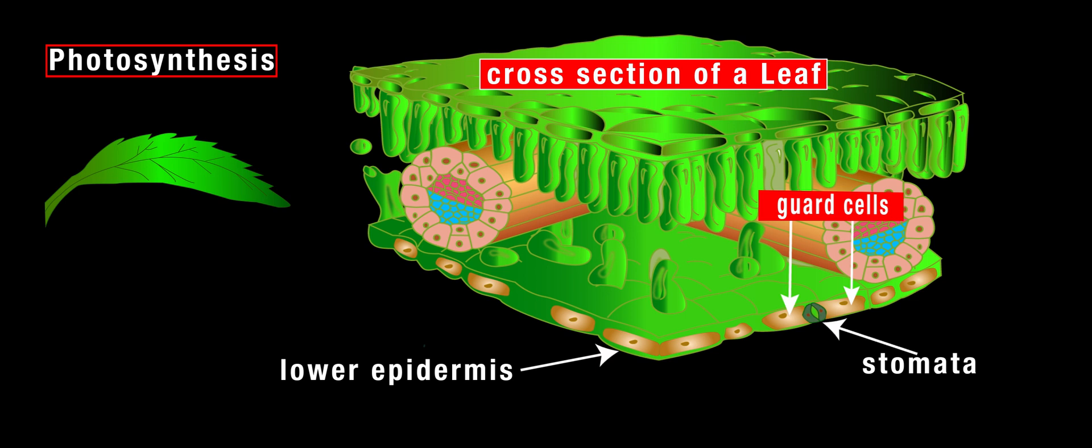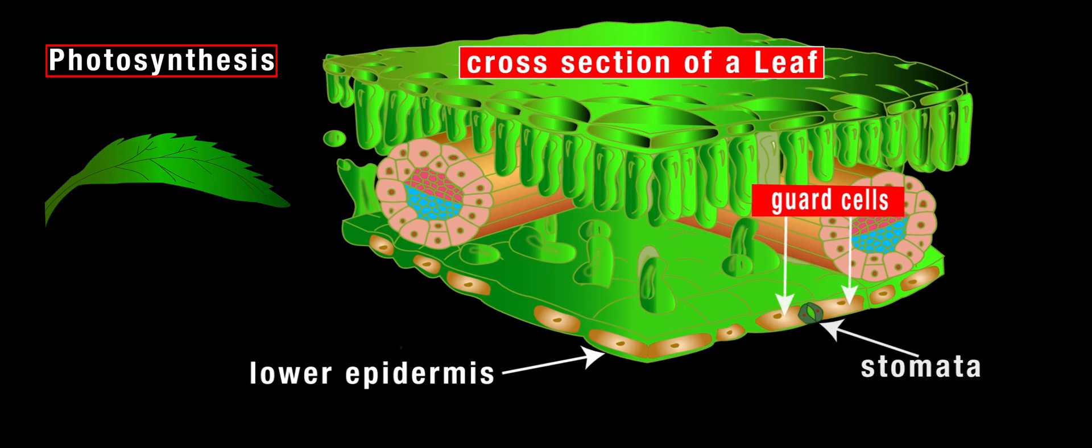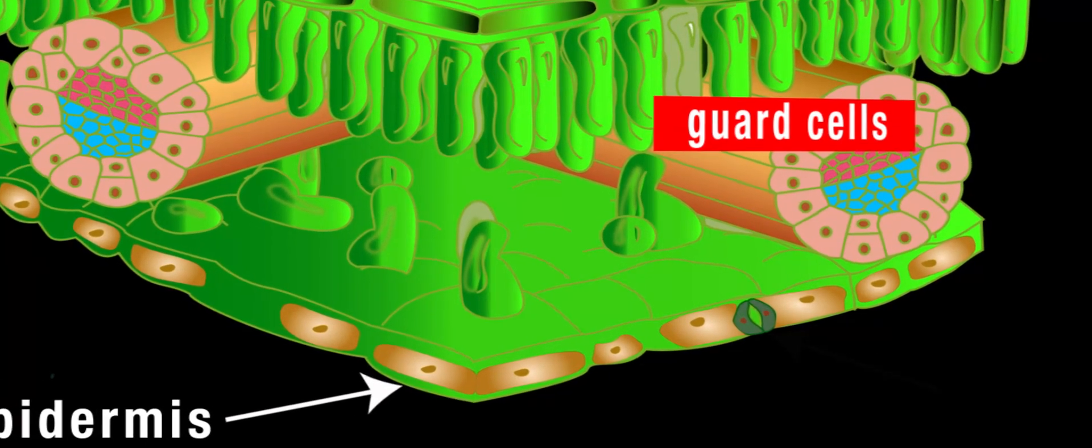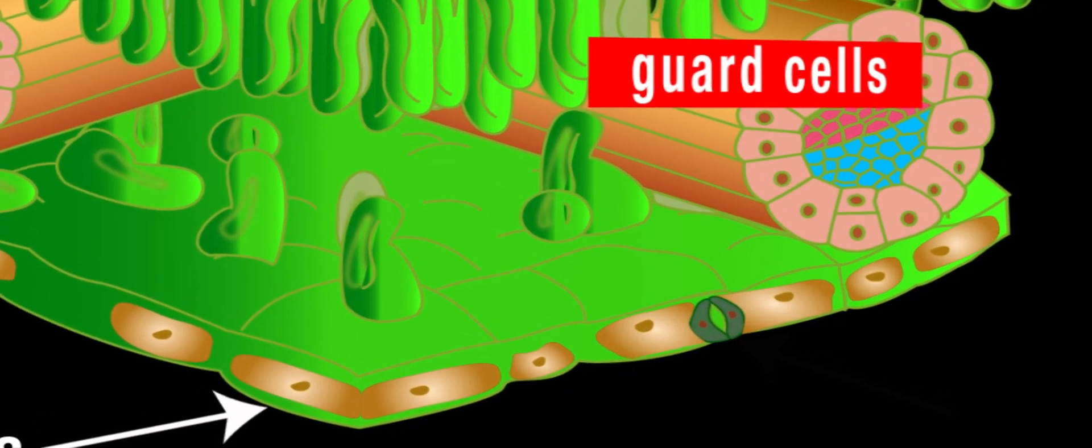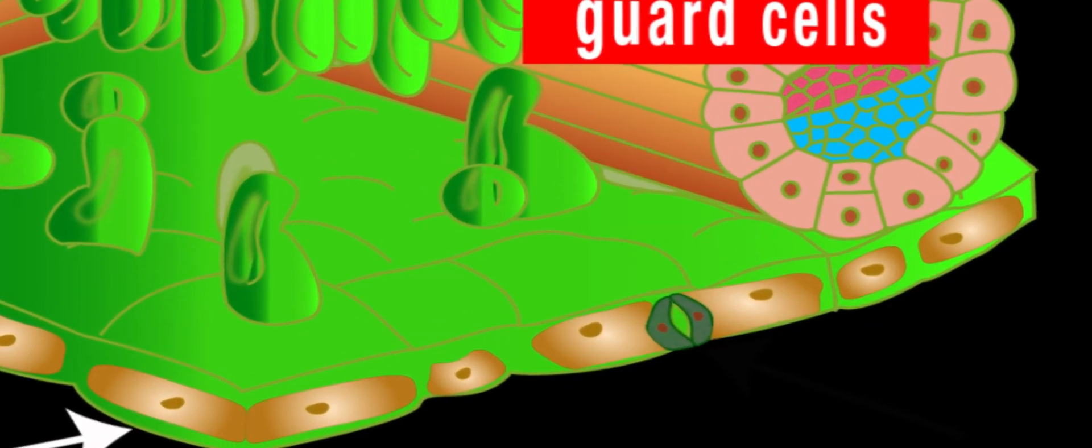Guard cells facilitate the opening and closing of the stomata. Carbon dioxide enters the leaf through the stomata and is distributed to all the cells.